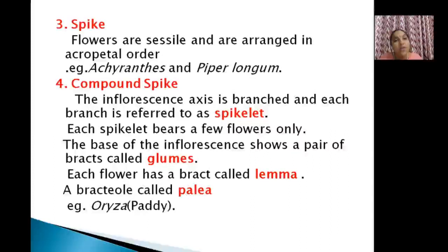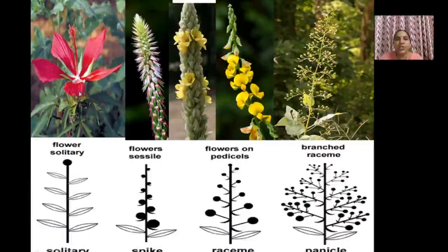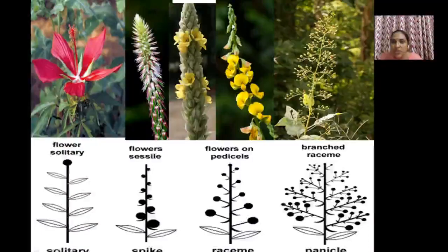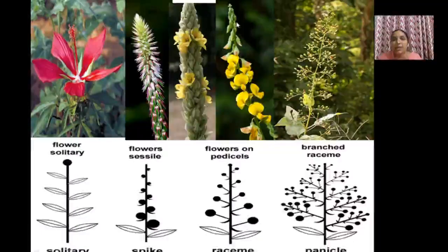So compound spike is a branched inflorescence axis, each branch being a spikelet. Looking at the diagrams: a solitary flower occurs singly. In spike, flowers are sessile. In raceme, flowers have pedicels. In branched raceme or panicle, several racemes are arranged on branches. The lower larger flowers are at the base and small buds appear at the tip — this is the acropetal succession of a simple raceme. The peduncle is the stalk of the entire inflorescence.